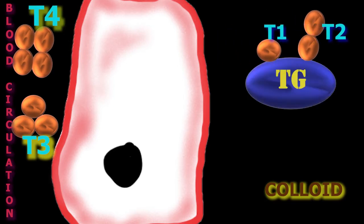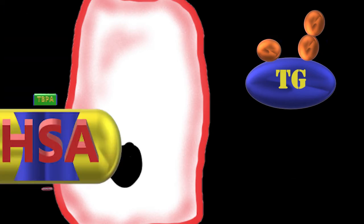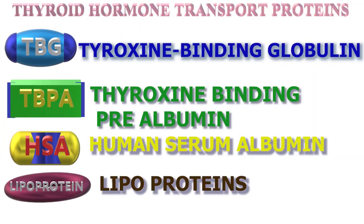More than 99 percent of both T3 and T4 combine with transport proteins in the blood, mainly thyroxine-binding globulin (TBG), transthyretin (thyroxine-binding prealbumin, TBPA), human serum albumin, and lipoproteins.